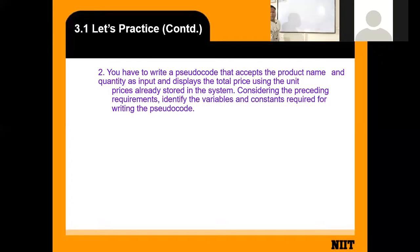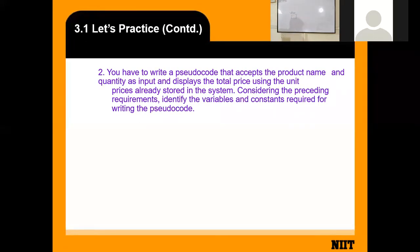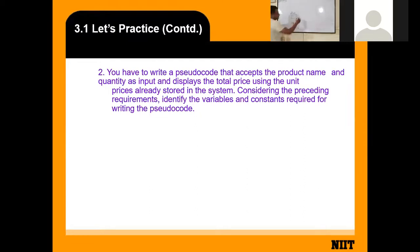For the product name, you have to define one variable. For quantity, you have to define another variable — so two variables so far. Then when you use the product name and quantity, you get the total price, so you need another variable for total price. The unit price is already stored in the system, so that requires another location.